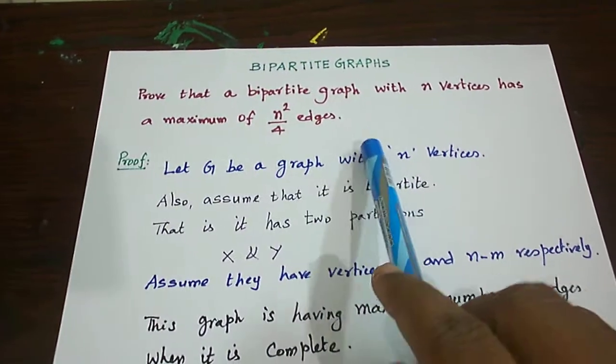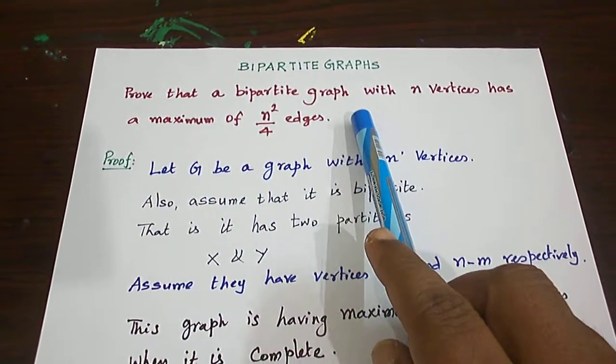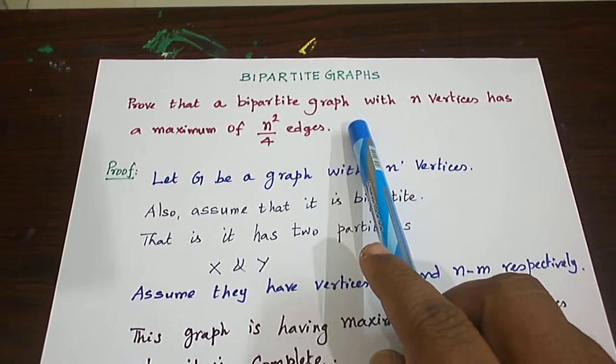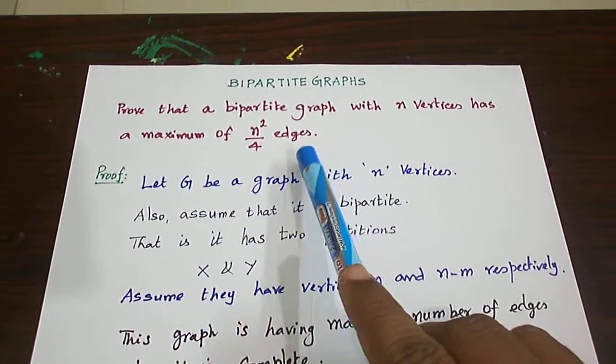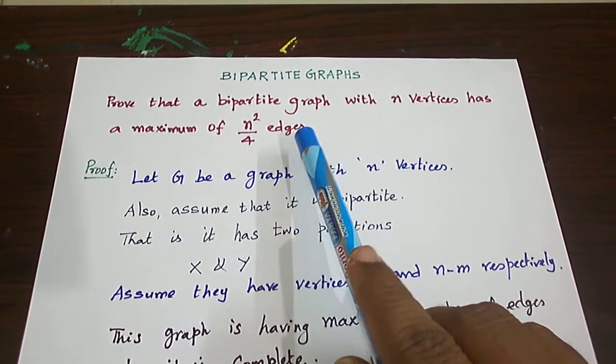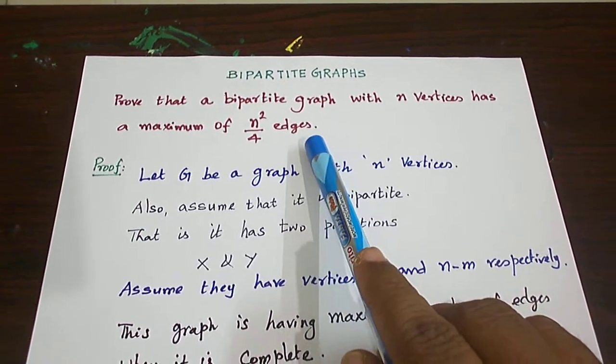Hello students, today let us see a result from bipartite graphs. In a bipartite graph with n vertices, the maximum number of edges is n² by 4. This is what we are supposed to prove.